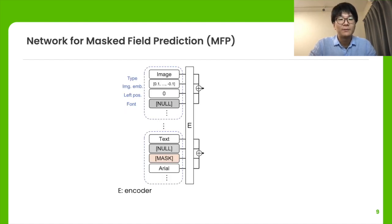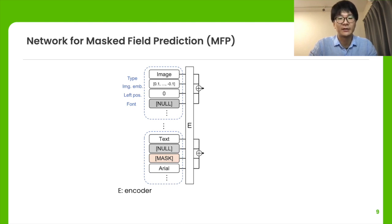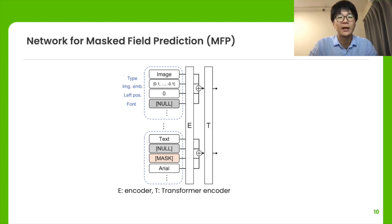We propose a network for solving masked field prediction. Our network first encodes each field into features by an attribute-specific encoder. The encoded features inside each layout element are then aggregated by summation.